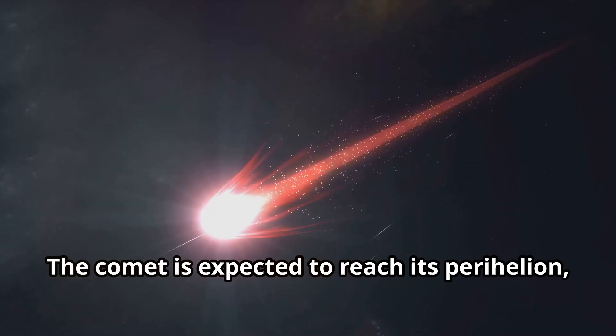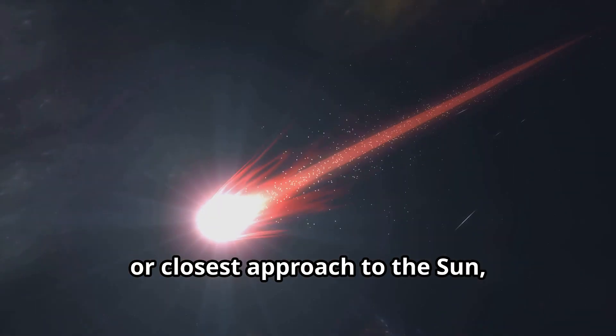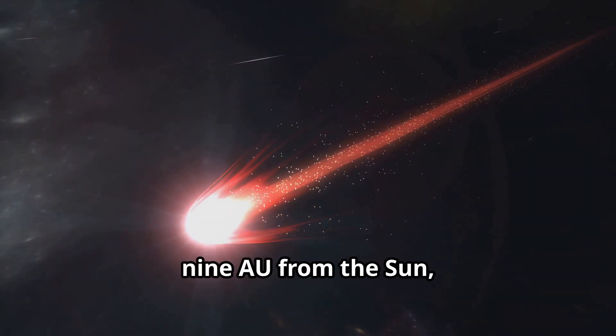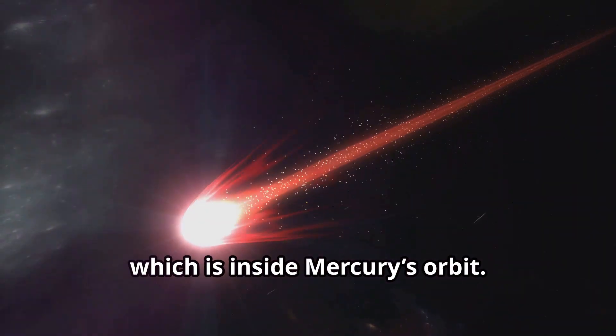The comet is expected to reach its perihelion, or closest approach to the Sun, around October 2024, where it will be about 0.39 AU from the Sun, which is inside Mercury's orbit.